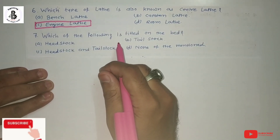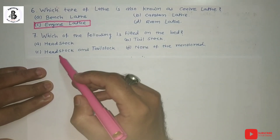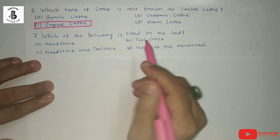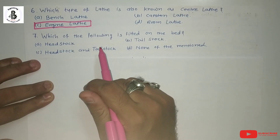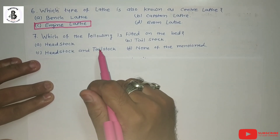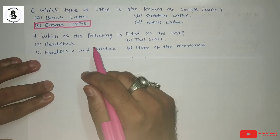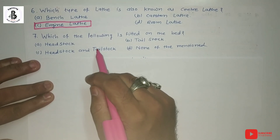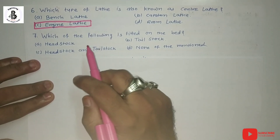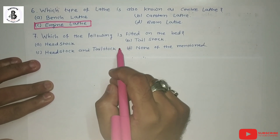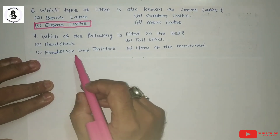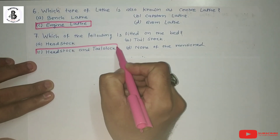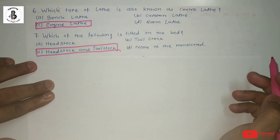The next question: which of the following is fitted on the bed? Option A: headstock. Option B: tailstock. Option C: headstock and tailstock. Option D: none of the above. This question is from the construction of the engine lathe. If you want to learn in detail about engine lathe construction and working, find the link in my description. Both the headstock and tailstock are mounted on the bed, so the right answer is C: headstock and tailstock.